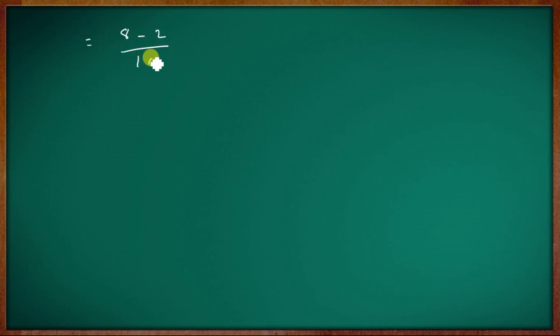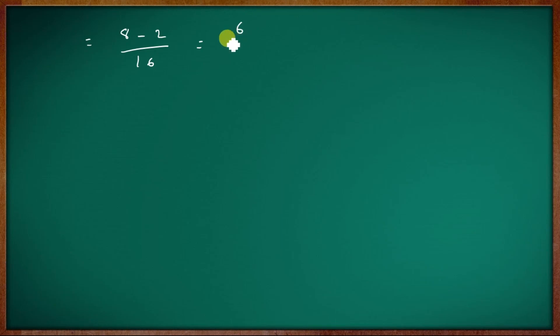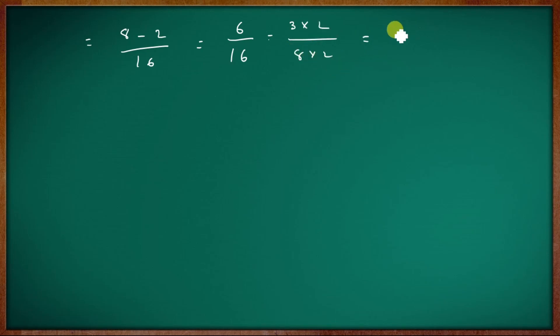Simplifying f'(1): cross-multiplying gives (8 − 2)/16 = 6/16, which simplifies to 3/8. So f'(1) = 3/8.